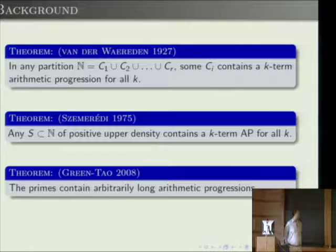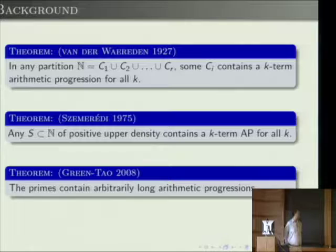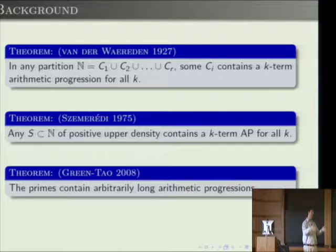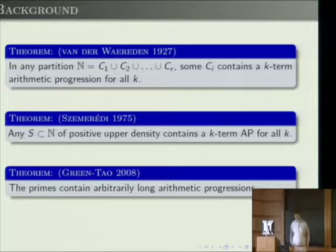The conjecture that the primes contain arbitrarily long arithmetic progressions was proved a few years ago. The Green-Tao proof doesn't give good estimates on the Erdős-Turán conjecture. Instead, what they show is that the primes form a dense subset of a pseudo-random set, and Szemerédi's theorem holds not only for subsets of intervals but also for subsets of pseudo-random sets.